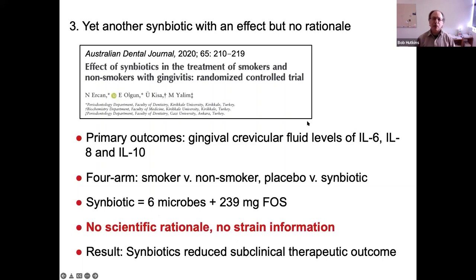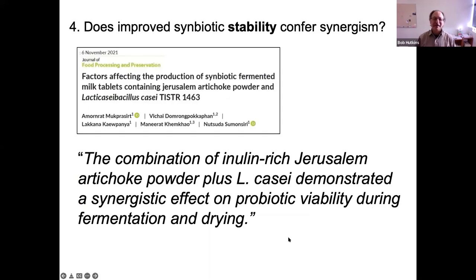Another symbiotic study with an effect but no rationale: a symbiotic where the primary outcome is ILs related to gingivitis, a two-arm study with smokers and non-smokers, six microbes but only 239 milligrams of FOS — I don't think that's sufficient — and again no rationale, no strain information. There's also an interesting study where they talk about a synergistic effect but use the definition of synergism differently than we intended in the paper. In this case, combining inulin with an LKCI probiotic improved the viability of the strain during production and drying — they called this a synergistic effect, but I don't think this qualifies as synergism under the consensus paper.